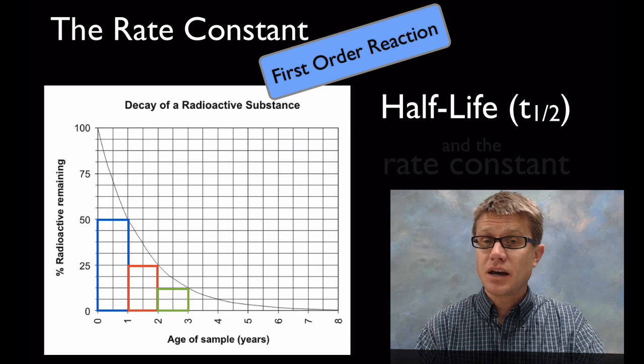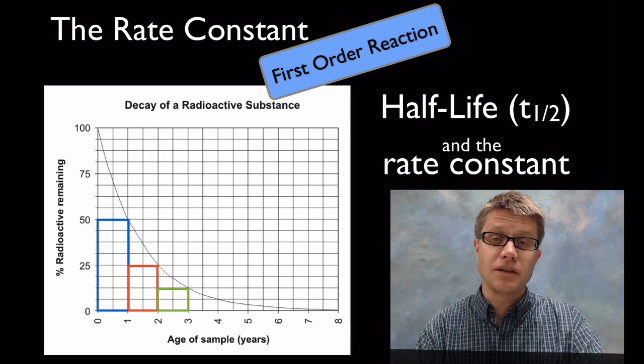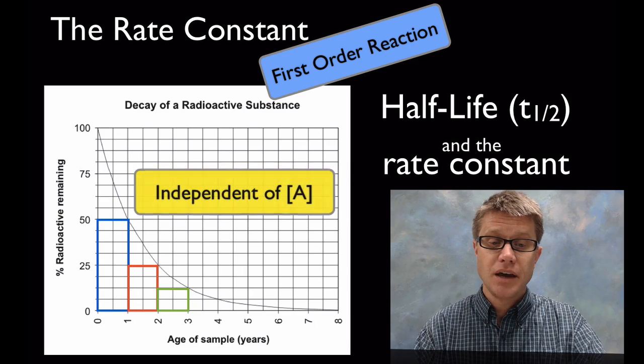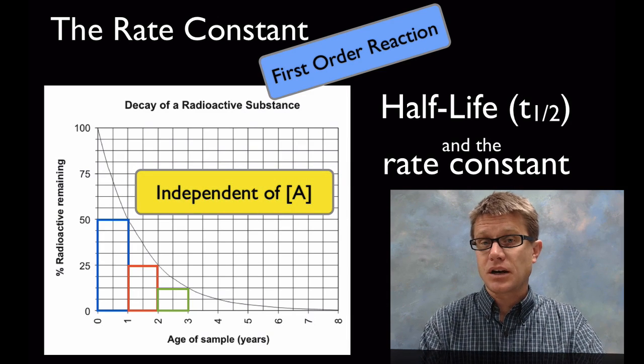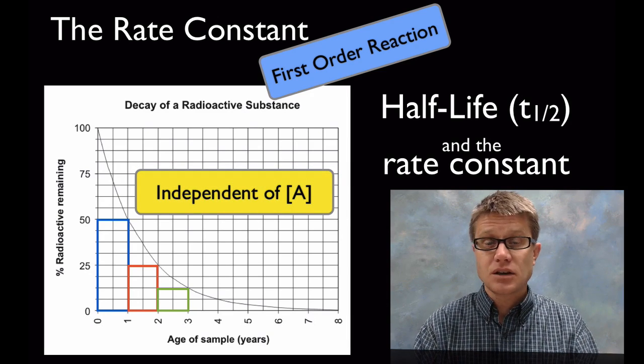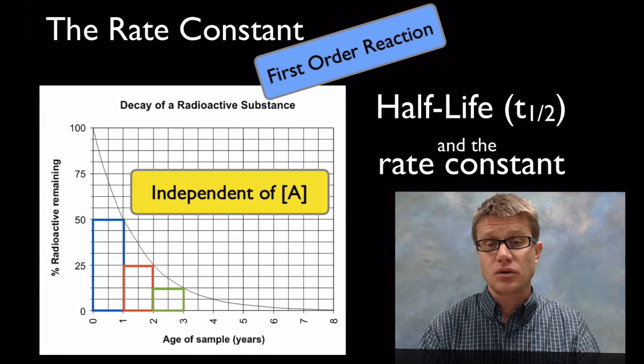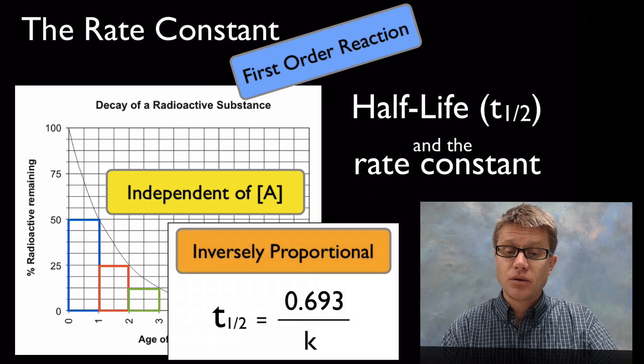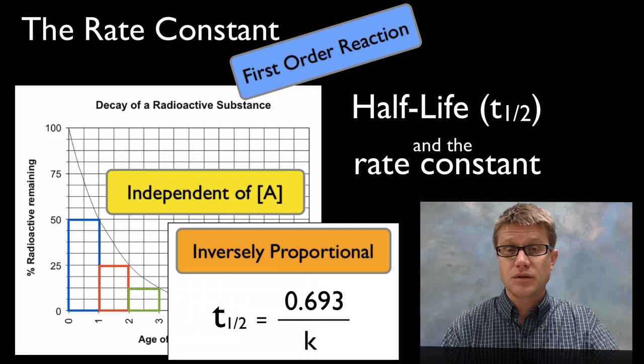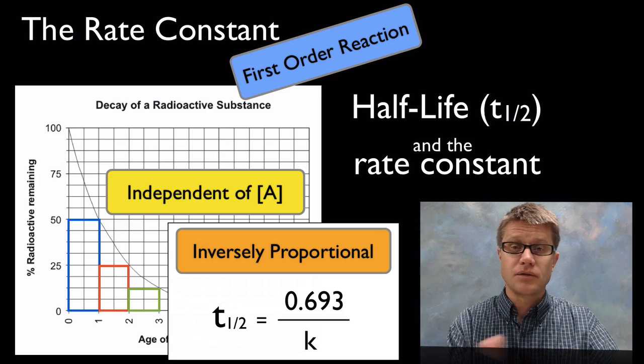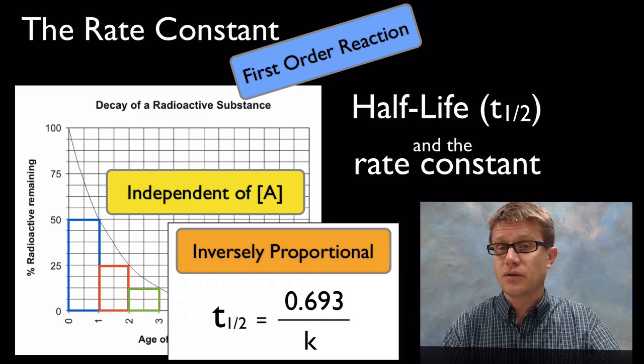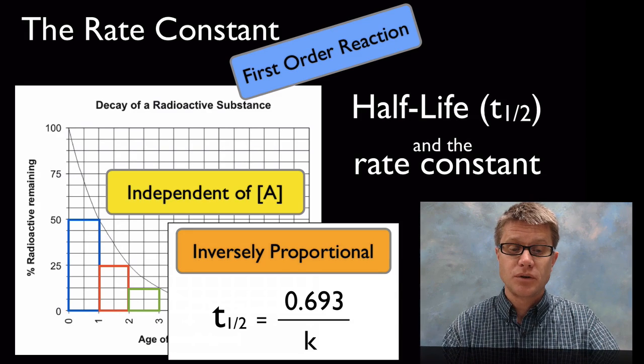And so rate, or excuse me K and half life have these cool relationships. First thing is that both of them are independent of the concentration. The K is going to remain constant and the half life is going to remain constant. And also we can use K once we've calculated to figure out half life or vice versa. There's a direct inversely proportional relationship between these two.